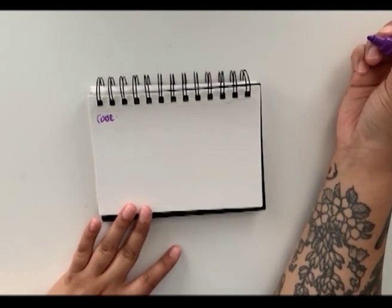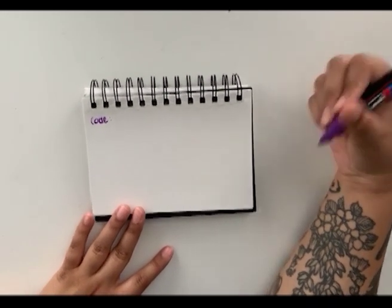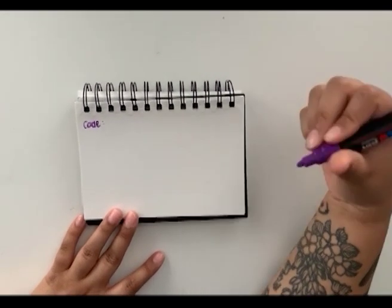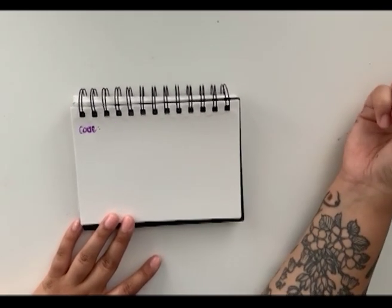So another way that you could show coding is through making a pattern. For this code I'm going to use numbers to represent the symbols that we're going to draw.